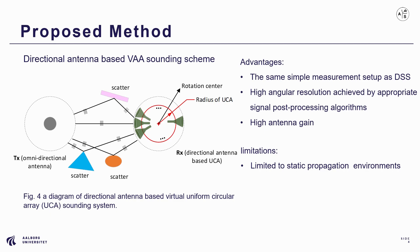High gain antennas are used instead of omnidirectional antennas, which are more available and favorable in high frequency bands. Due to the slow mechanical movement speed, the two reference methods and the proposed method are typically used in static environments.